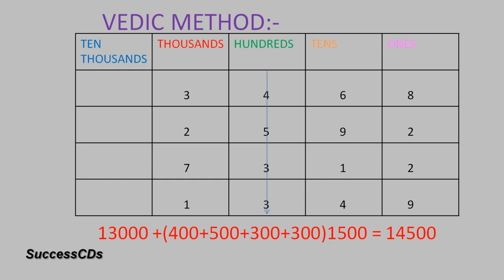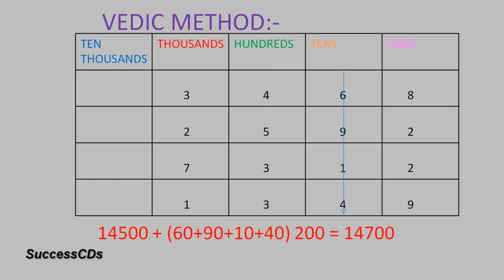Then you proceed to the hundreds place numbers: 400, 500, 300, 300 — they give you a total of 1500. So under 13,000 write 1500. Add them and you get 14,500. Then proceed to the tens place numbers: 60 plus 90 plus 10 plus 40 gives you 200. So 14,500 was the previous number — add 200 to it and you get 14,700. Then proceed further to the ones place.